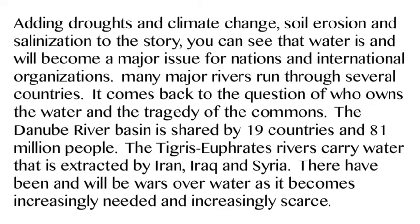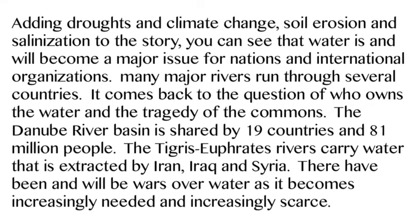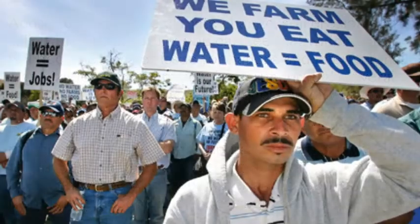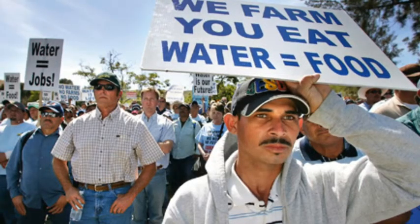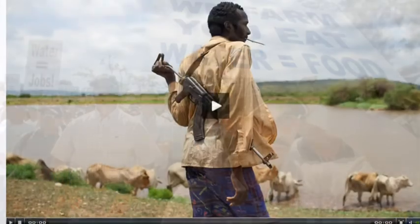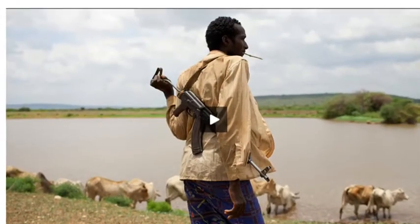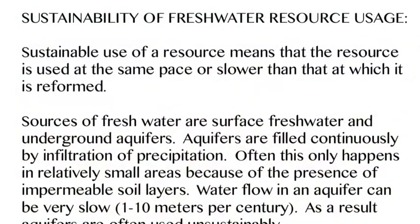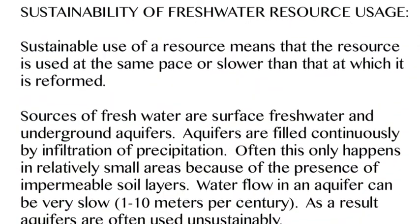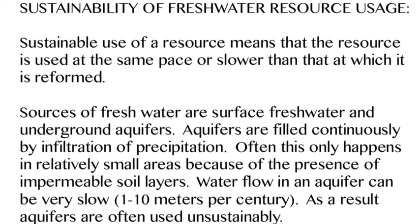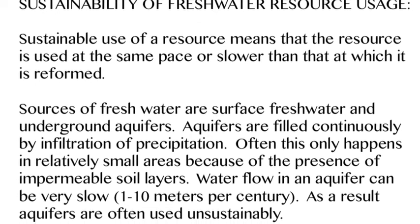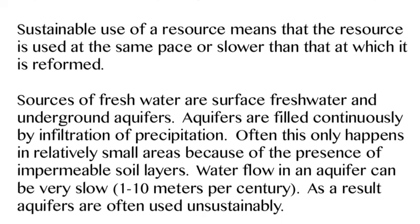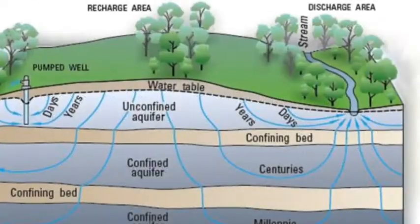Rivers run through several countries — the Danube River is shared by 19 countries. Which country gets to use the water? What happens to countries at the end of that river? You start having wars and people fighting over it. So is there a way to sustainably use freshwater so that future generations can use it too? Sustainability means using the resource at the same pace or slower than it's reformed.